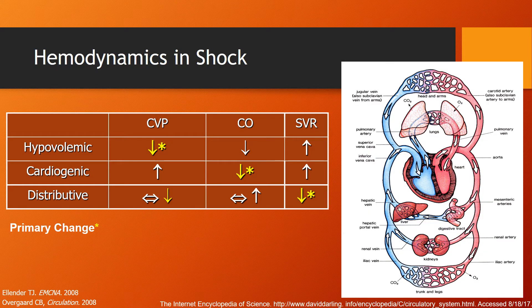It's important to understand the hemodynamics in different types of shock, because then we can identify which vasopressor agents would be most appropriate and beneficial. In hypovolemic shock, the primary change is a decrease in central venous pressure. In cardiogenic shock, the primary change is a decrease in cardiac output. And in distributive shock, there's both a decrease in systemic vascular resistance as well as central venous pressure.